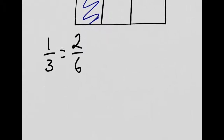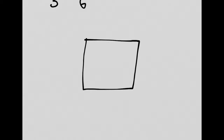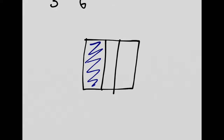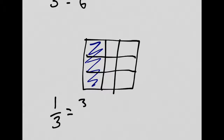Should we do another? I've got thirds again. Let's do one third again, but I'm going to cut it differently. Now I've shown that one third is equal to what? Let's count: one, two, three, four, five, six, seven, eight, nine. And one, two, three are shaded. So one third equals three ninths. Amazing, isn't it?